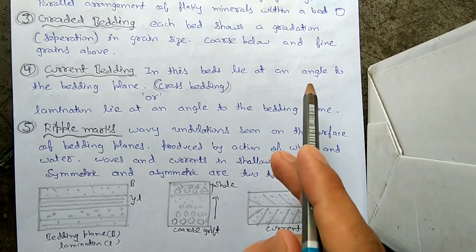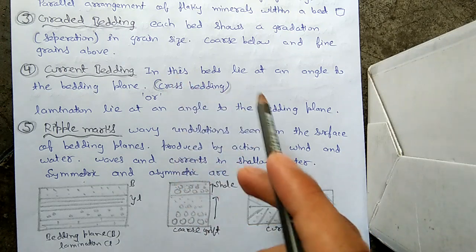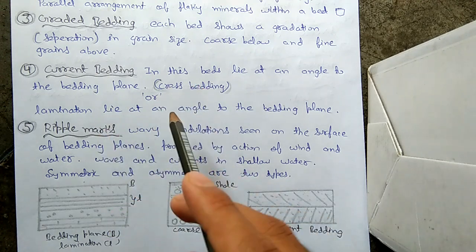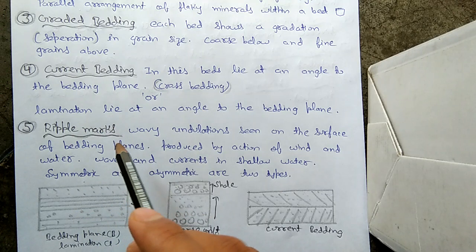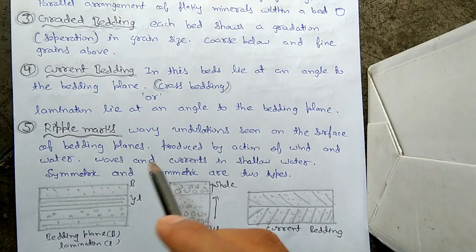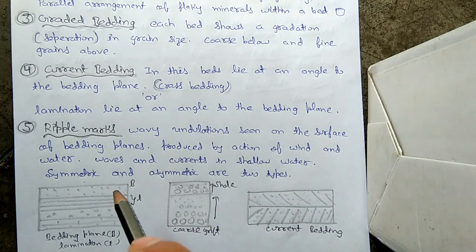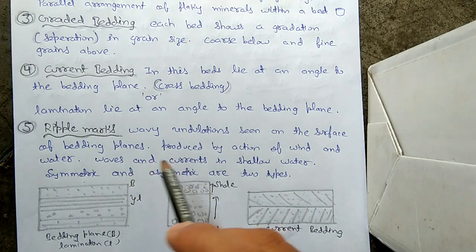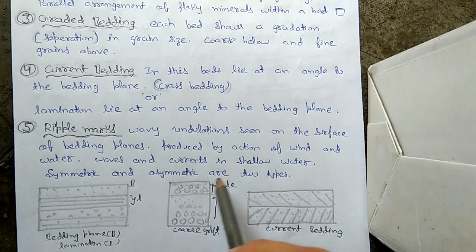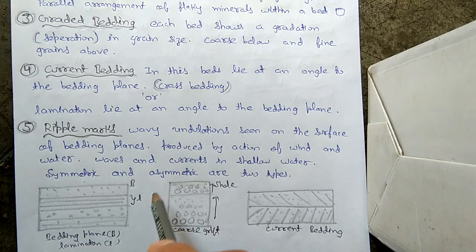The fourth structure is current bedding, also known as cross bedding. In this, beds lie at an angle to the bedding plane — there is an angle between the lying bed and the bedding plane. The fifth structure is ripple marks: wave-like undulations seen on the surface of bedding planes, produced by action of wind and water waves and currents in shallow water. These are of two types: symmetric and asymmetric ripple marks.